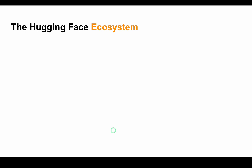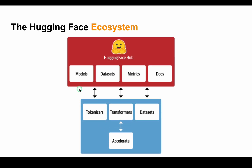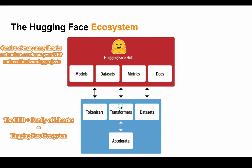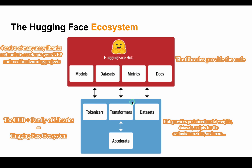This is the Hugging Face ecosystem. What started with Hugging Face Transformers has quickly grown into a whole ecosystem consisting of many libraries and tools to accelerate your NLP and machine learning projects. The Hub and the family of libraries make up the majority of the Hugging Face ecosystem as we can see in this figure. The libraries supply the code and the Hub offers pre-trained model weights, datasets, as well as scripts for evaluation metrics and many more operations.